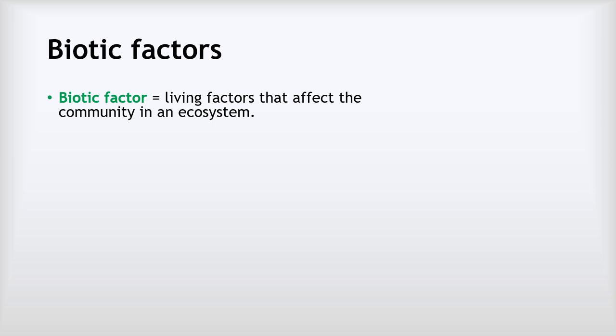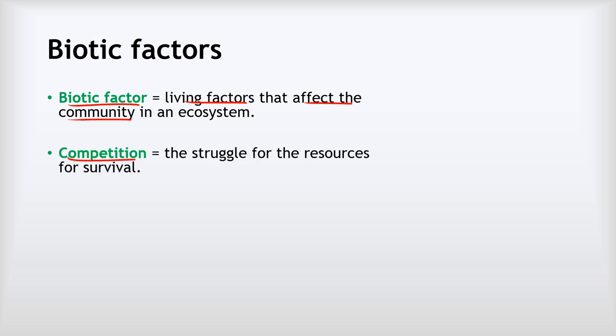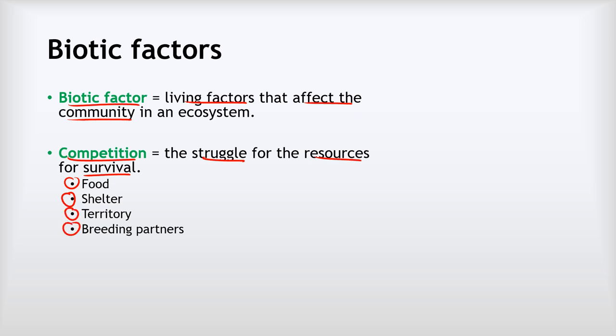Biotic factors are living factors that affect the community in an ecosystem — essentially the living influences on what can live where and how well it can live. One major biotic factor is competition: individual organisms constantly struggle to get the resources they need for survival. They might compete for food with other members of their own species and with members of different species — for example, lions competing with leopards and cheetahs for gazelles. They also compete for shelter, territory, and breeding partners so that they can pass on their genes.